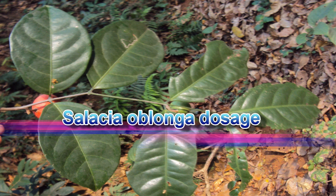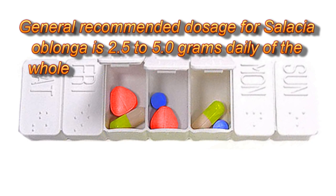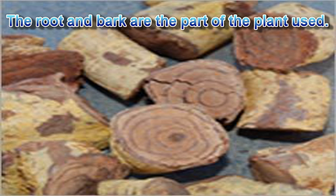Salatia oblonga dosage: The general recommended dosage is 2.5 to 5.0 grams daily of the whole herb, or a comparable amount as extract. The root and bark are the parts of the plant used.